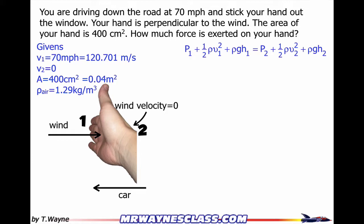Now if I look at this, the height on both sides of the hand is the same, so that means that's just going to go away. Nice. And then I've got P1 plus one-half rho V squared equals P2. So when I'm looking at this on the back side, I didn't have any wind velocity, so V2 is going to go away to zero.